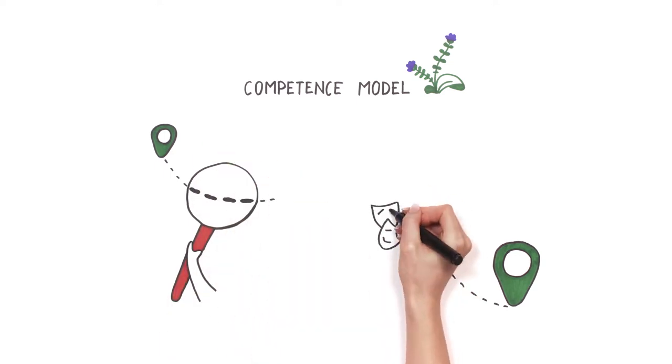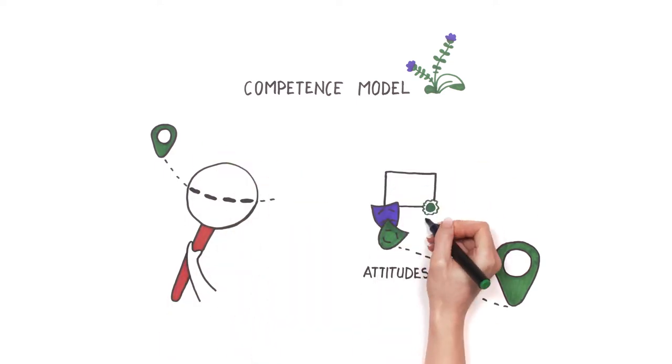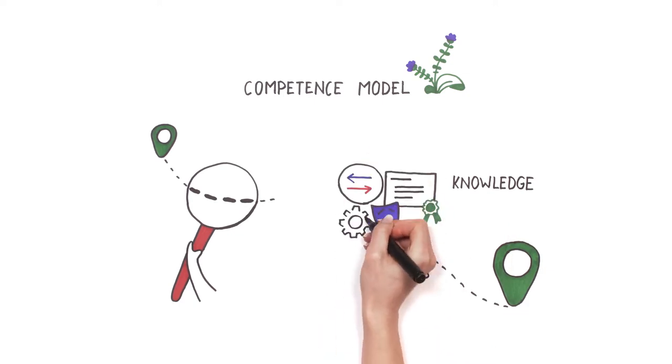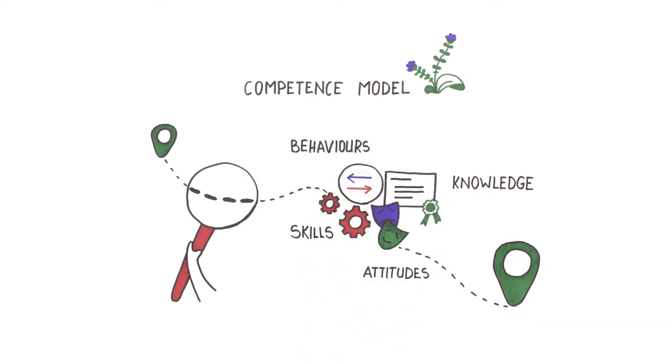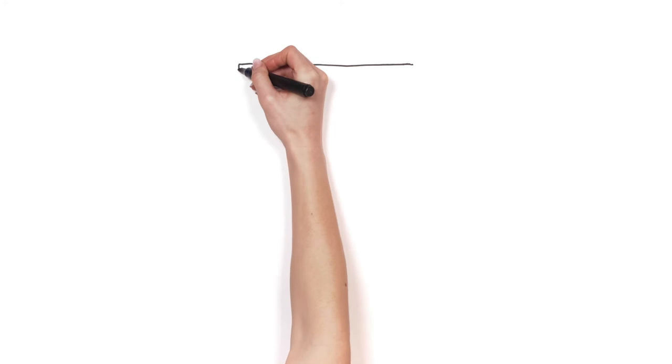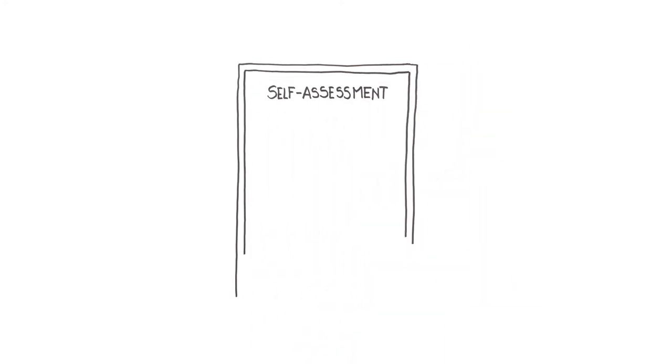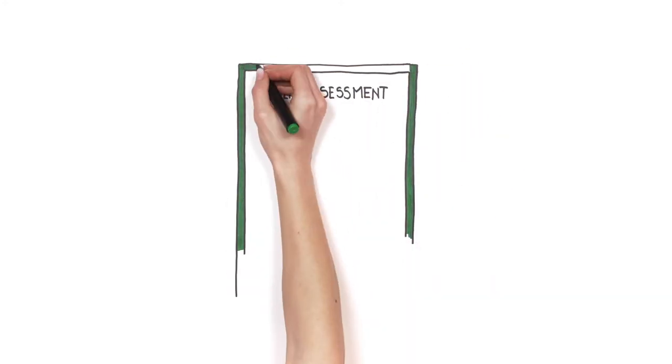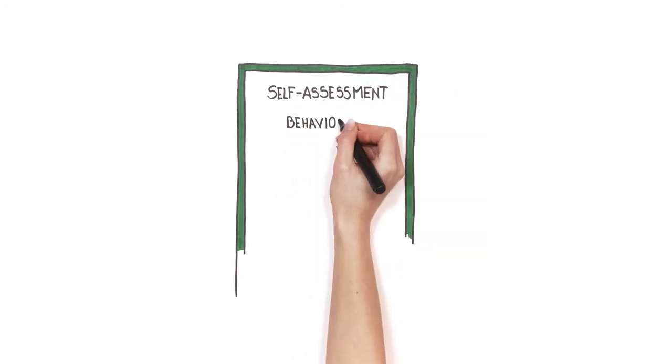A number of competence models focus on several dimensions of competence such as attitudes, knowledge, skills, and behaviors. It is recommended to start your assessment from behaviors in specific youth work situations because behaviors are what you can observe.